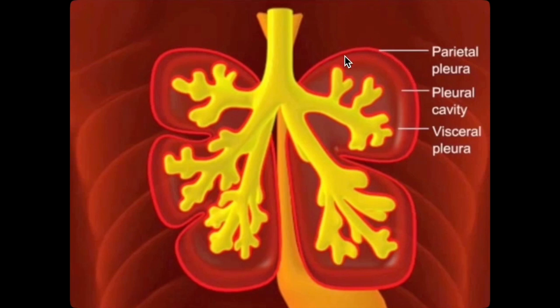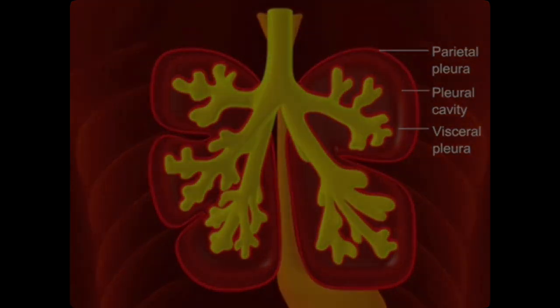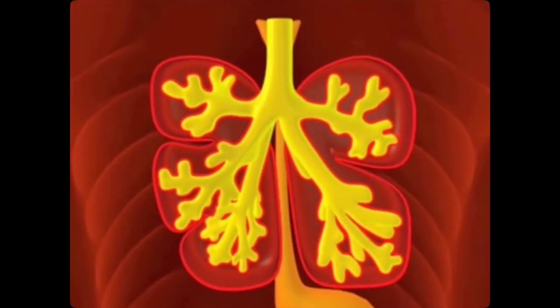During weeks five to six, as the bronchial buds grow, the splanchnic mesoderm or visceral pleura pushes into the somatic mesoderm or parietal pleura of the lateral thoracic wall. The resulting space between the two pleural layers is what we call the pleural cavity.